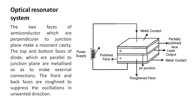Optical resonator system: the two faces of the semiconductor which are perpendicular to the junction plane make a resonant cavity. The top and bottom faces of the diode, which are parallel to the junction plane, are metalized so as to make external connections. The front and back faces are roughened to suppress oscillations in unwanted directions.